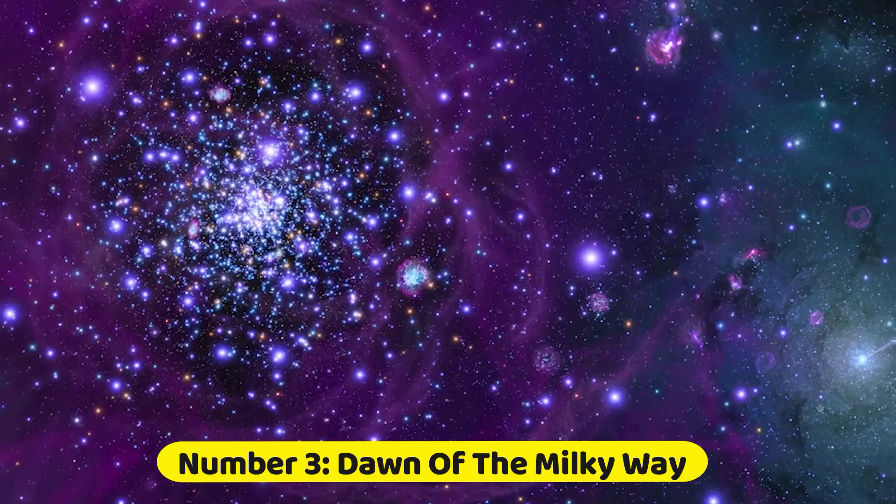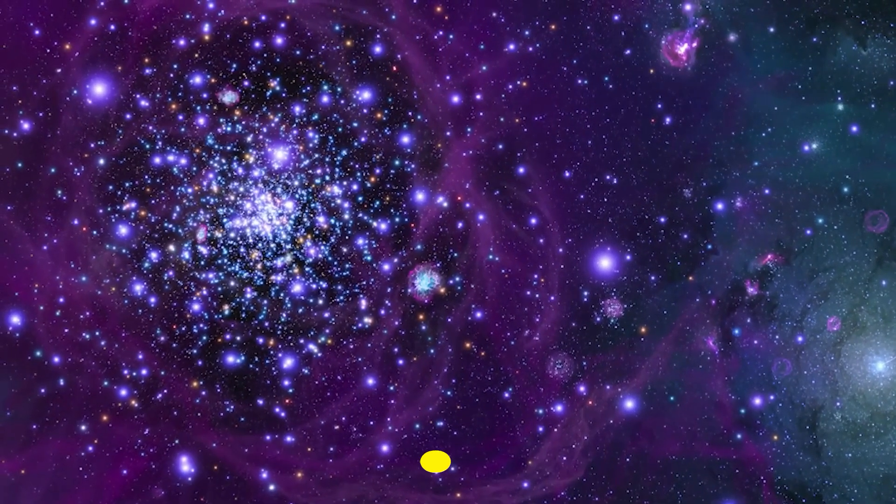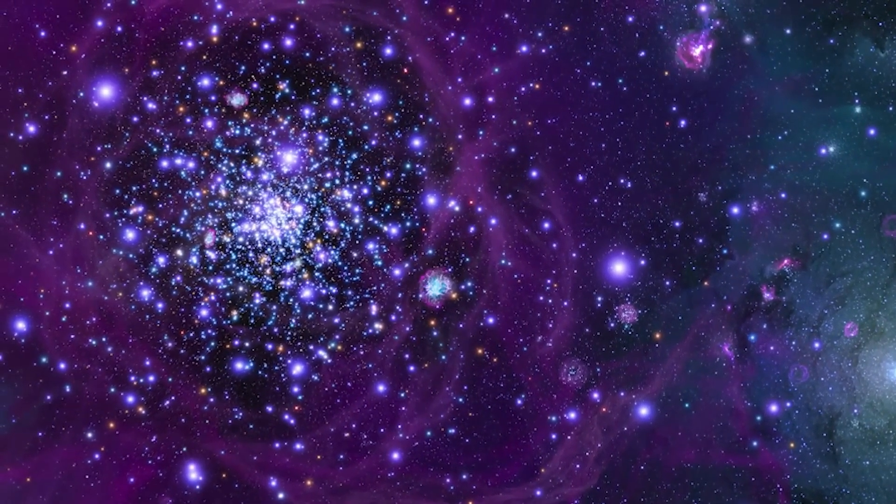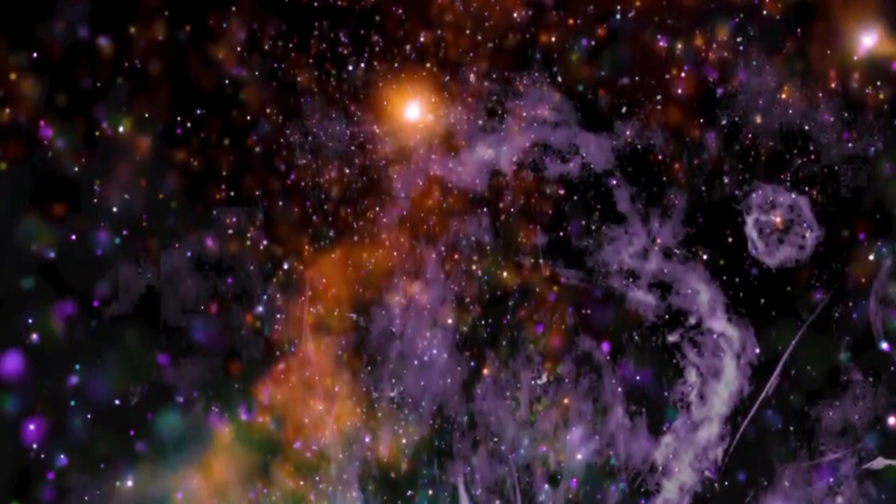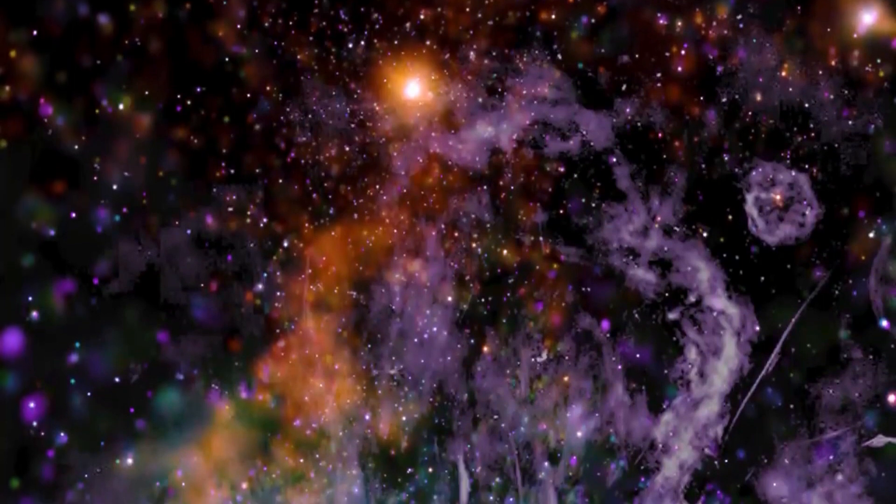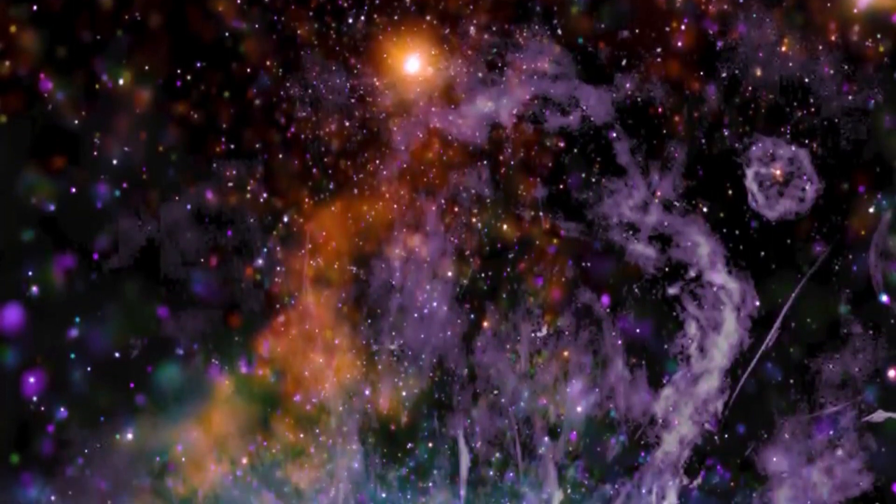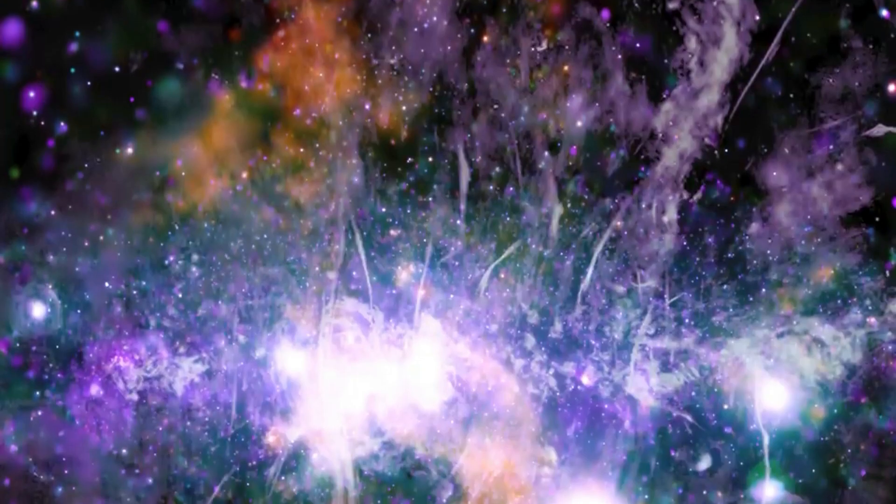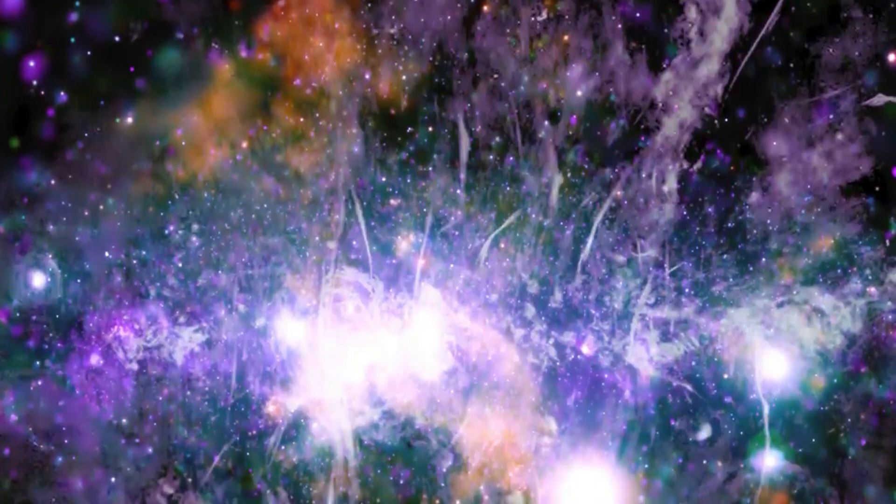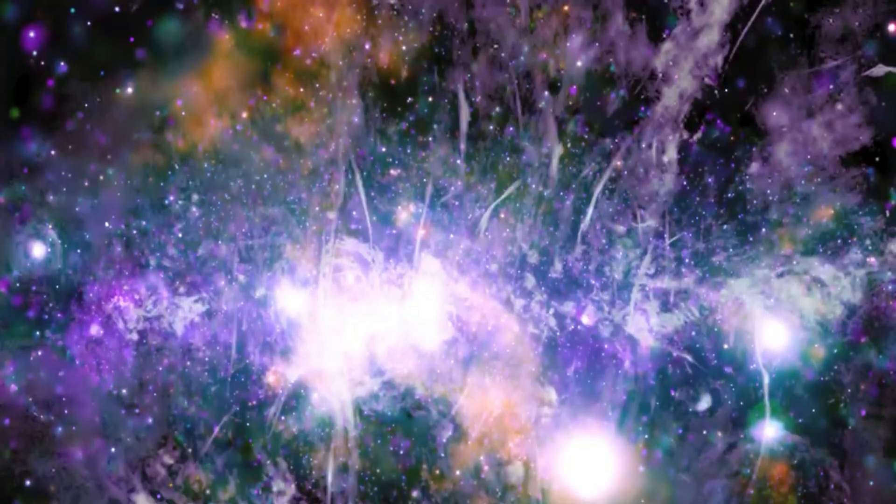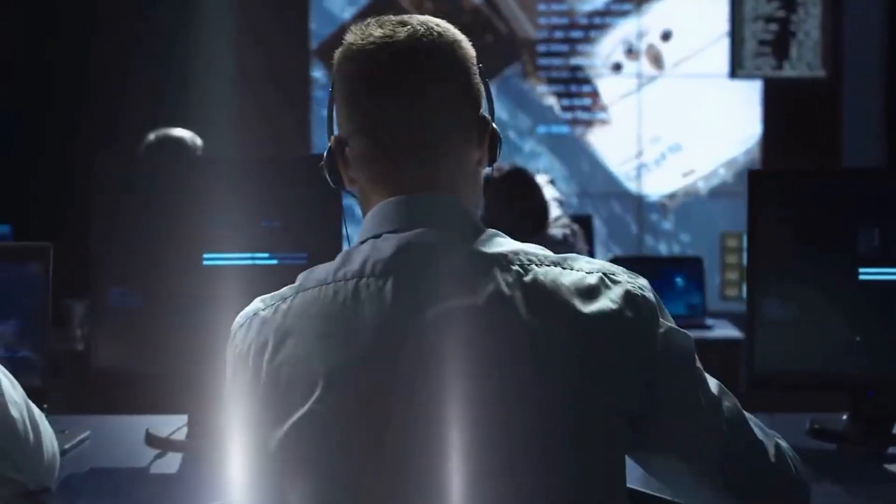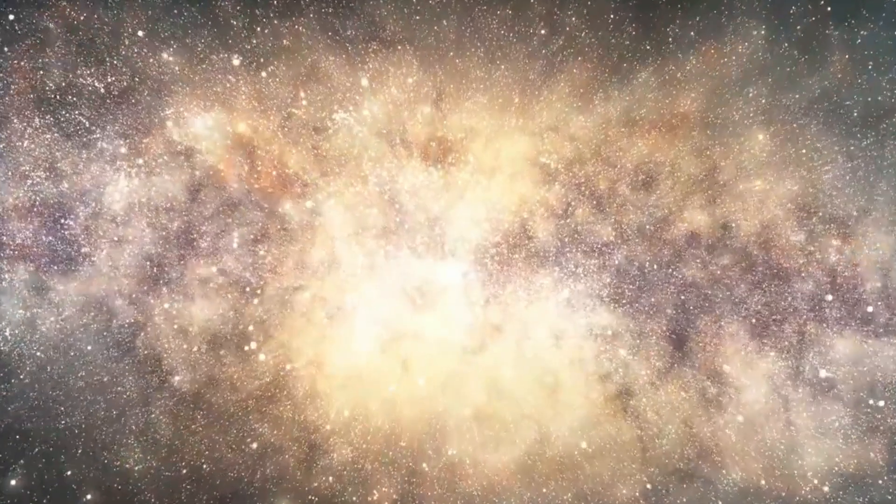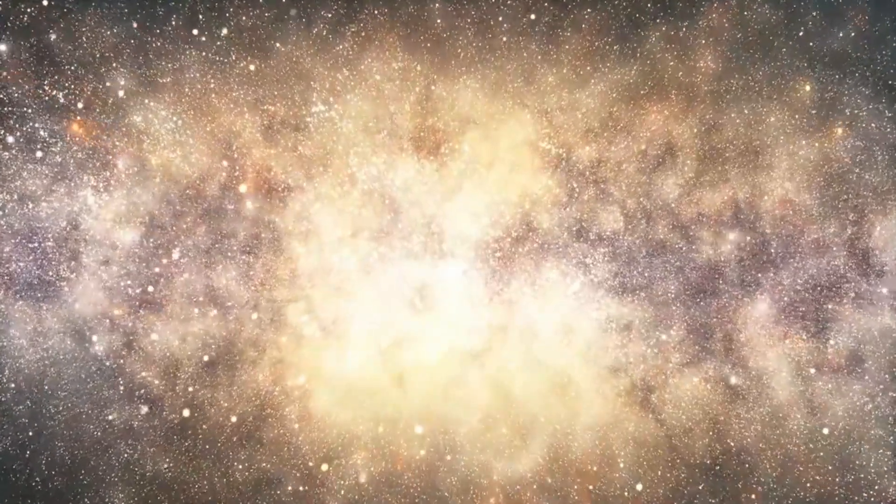Number 3. Dawn of the Milky Way. The blue star cluster situated in the upper left corner represents just one among numerous ancient globular clusters that gradually combine to shape our galaxy. This particular cluster can still be spotted within the Scorpius constellation, recognized as the globular cluster M 4. Astronomers employ the Webb Telescope to discern the cluster's most aged and dimmest residual stars, commonly referred to as white dwarfs.